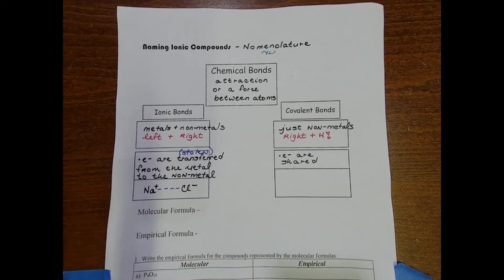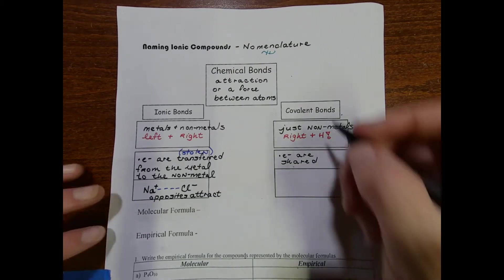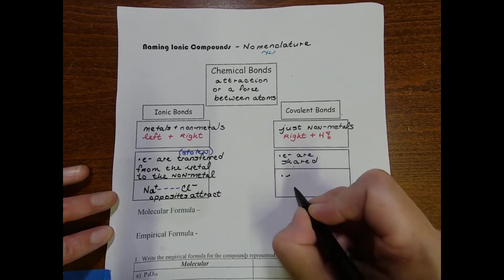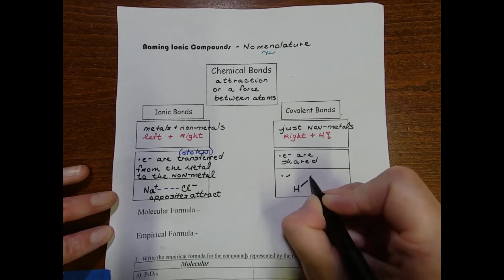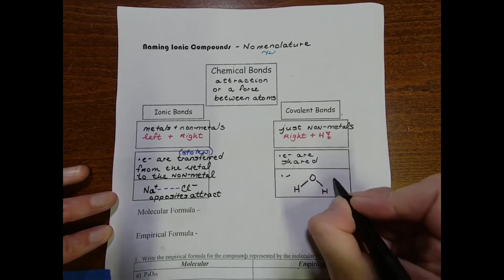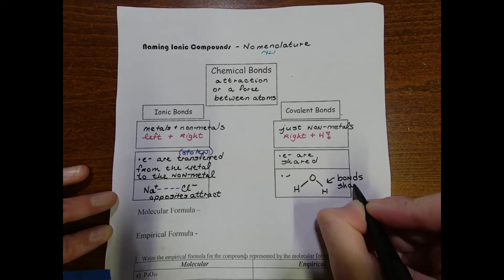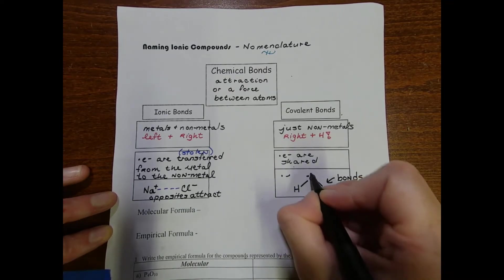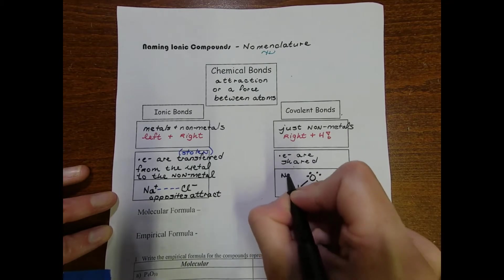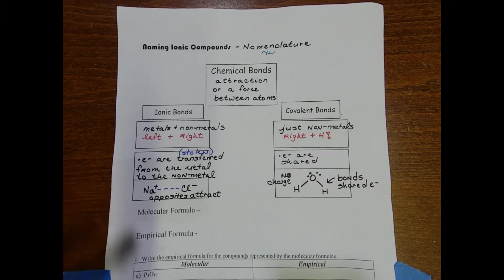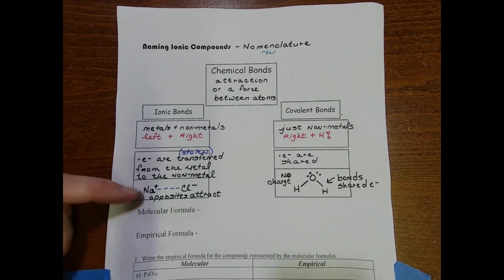That's why we're gonna designate the ionic bond with a dashed line. Covalent bonds are a little bit different in that the electrons are shared. When we depict this we're gonna draw solid lines - they're called bonds but they represent those shared electrons. There's no charge on any of the elements in a covalent molecule like water.